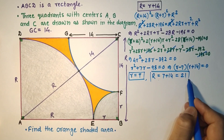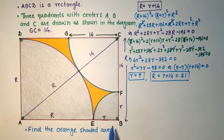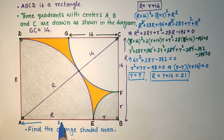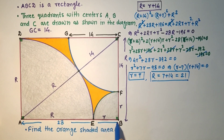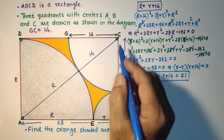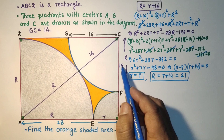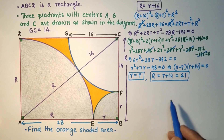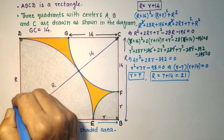So R = 21. R + r means the length of the rectangle is 21 + 7 = 28, and this width we found as 14. R + 7 = 21, so this side is 21.